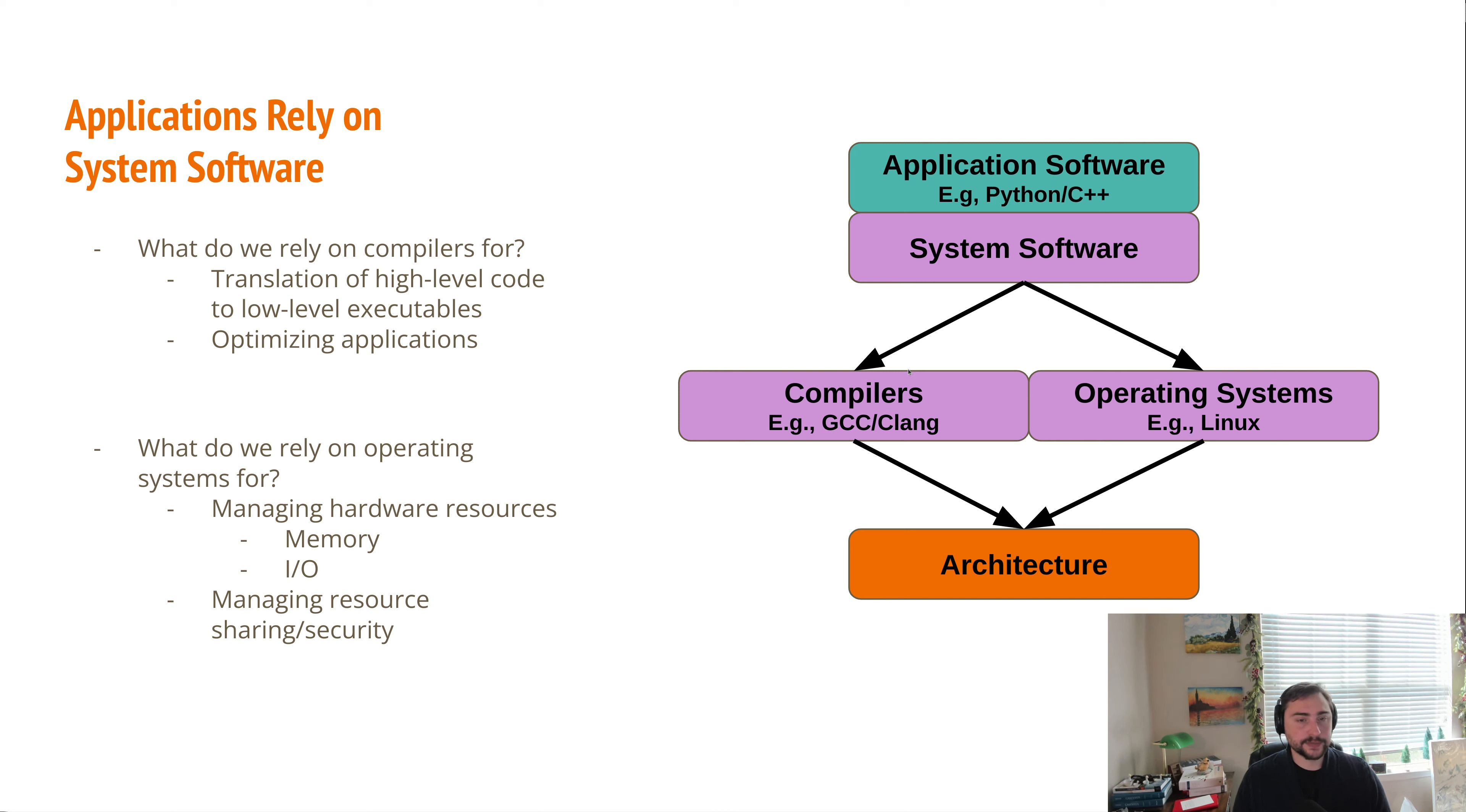But what exactly do we rely on these pieces for? What are we relying on compilers for? Well, firstly we rely on compilers to translate our high-level code into the low-level executables that our processor can understand. So our compilers will take high-level C++ and translate them into the instructions and eventually the machine code that can be run on our processors. But we actually rely on compilers for a number of things.